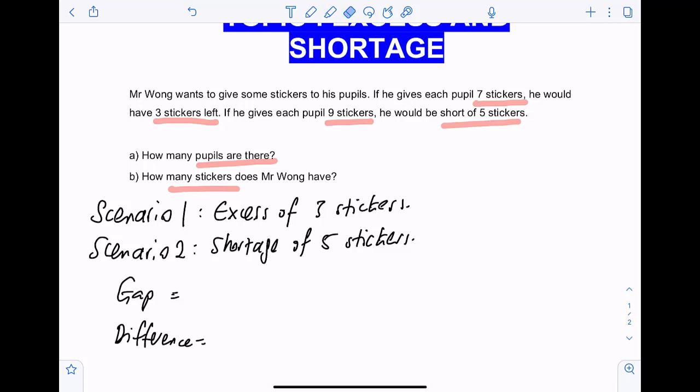When both are excesses, both scenarios are excess, to find the gap, we have to do a subtraction. When both are shortages, to find the gap, we do a subtraction as well. But when one is excess, one is shortage, to find the gap, we have to add the two excesses and shortage.